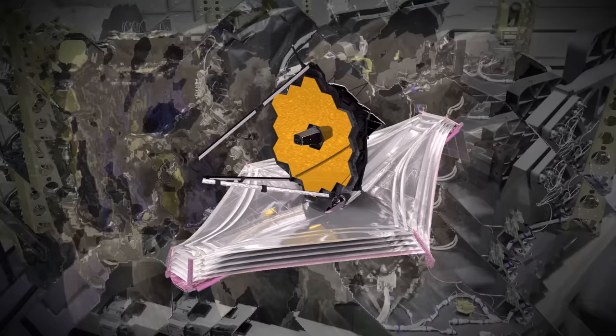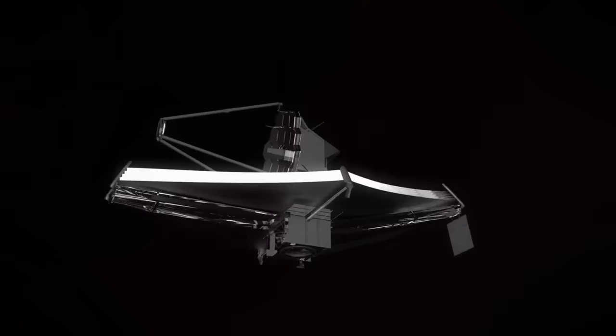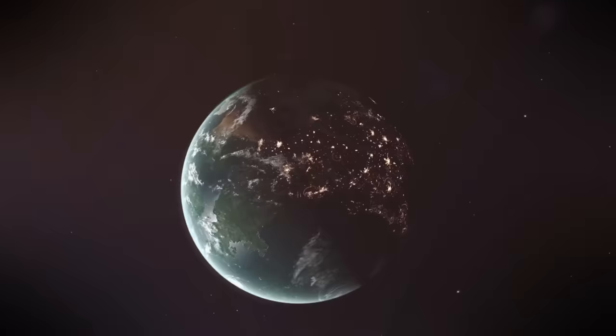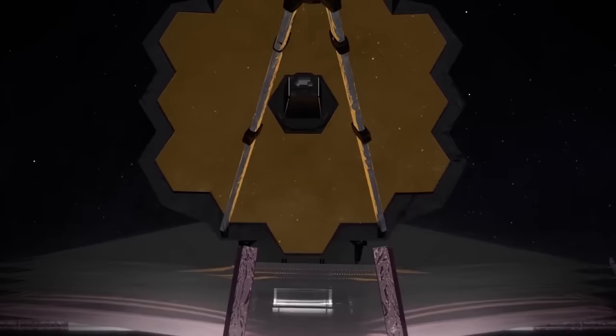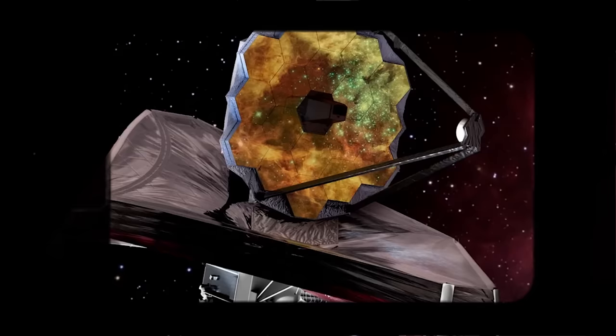The deployment of the JWST into a special orbit at the second Lagrange point, L2, approximately 1.5 million kilometers from Earth, further ensures that the telescope remains shielded from the interference of Earth's heat and light. This strategic positioning maximizes the JWST's observational capabilities, enabling it to peer into the depths of the universe with unparalleled clarity. In essence, the JWST's advanced technologies represent a convergence of innovation, engineering excellence, and a relentless pursuit of knowledge.